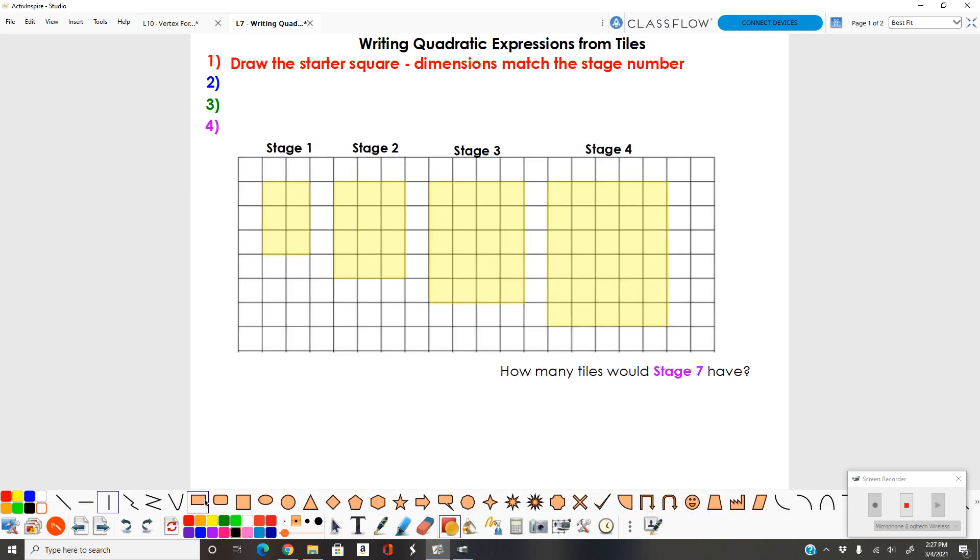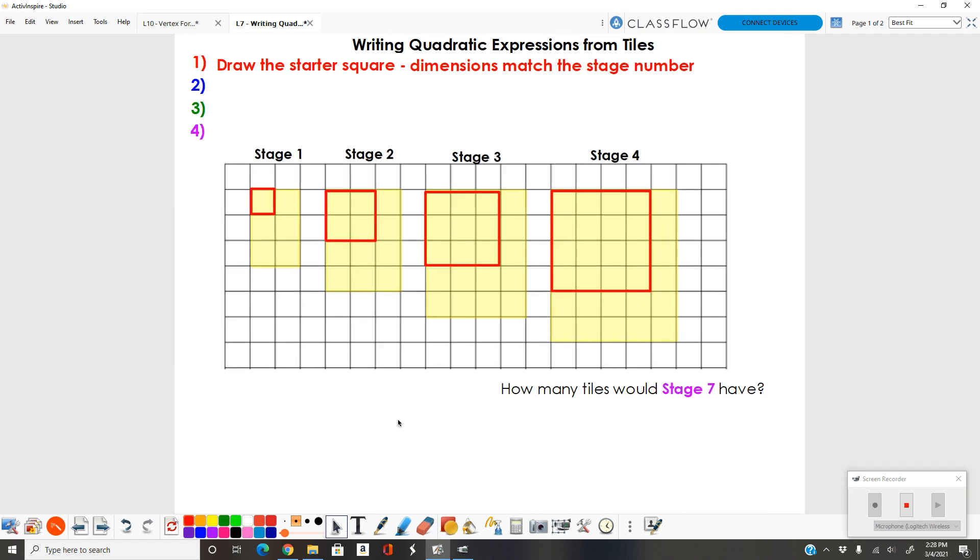I'm going to start off by drawing a starter square for each of these diagrams. For stage 1, my dimensions are going to be 1 by 1. For stage 2, I would have a 2 by 2 square. Stage 3 would give me a 3 by 3 starter square, and finally stage 4 would have a 4 by 4 starter square. You always have to start with your starter square no matter what.